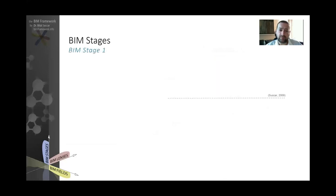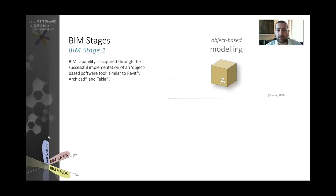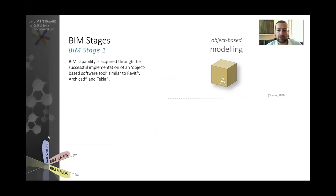Moving from pre-BIM to BIM Stage 1 — object-based modeling — is quite a significant change. Of course it needs a lot of preparation, but by adopting the right tools and simple workflows, such as implementing object-based modeling software like Revit, ArchiCAD, or Tekla, we have started our journey in object-based modeling.